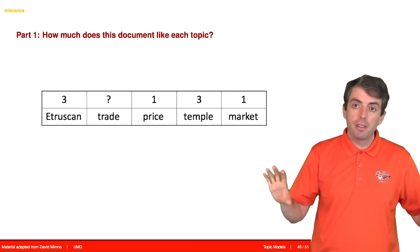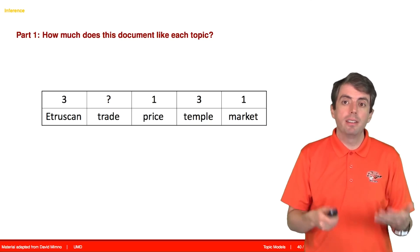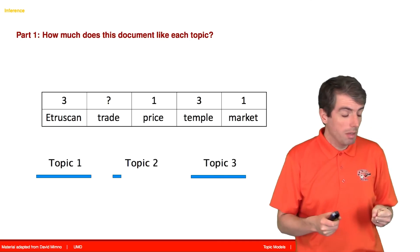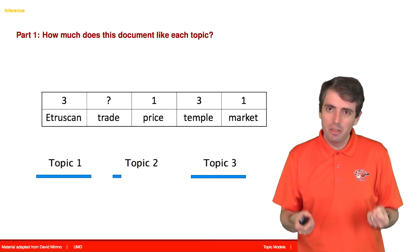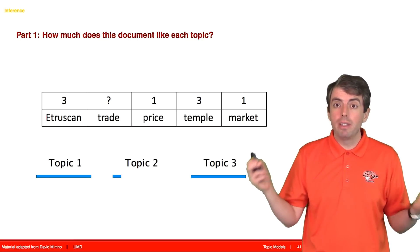Now remember, there are two parts to that conditional probability equation. The first part is how much does this document like a topic. So this document has used topic 1 a bunch, and it's used topic 3 a bunch. It hasn't used topic 2 very much, and we're going to represent that with these blue bars.